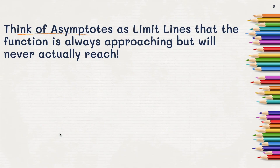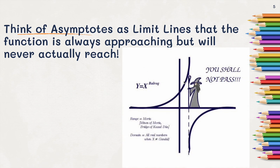Think of an asymptote as a limit line that the function is always approaching but never actually reaches — it gets closer and closer but never gets there. My silly example: if you've seen Lord of the Rings, here's Gandalf saying 'You shall not pass.' Our functions are going to look like U-ish shapes or swoops, getting closer and closer to this line but never actually reaching it. The space between the graph and the asymptote gets smaller and smaller, but it's never actually zero.